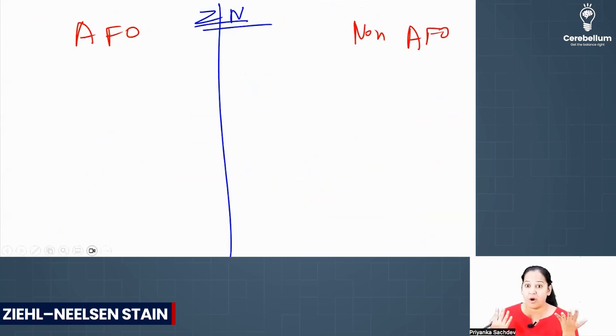Okay, AFO and what is AFO? Non-AFO. Acid-fast organism, non-acid-fast organism. So what are AFO? AFO are the bacteria which have mycolic acid present in their cell wall. Non-AFO are the bacteria which don't have mycolic acid in their cell wall.